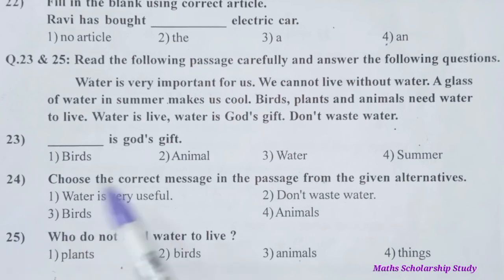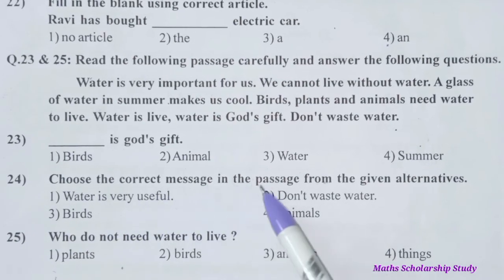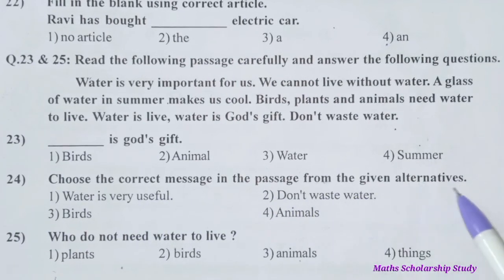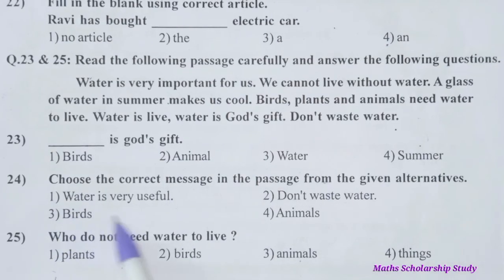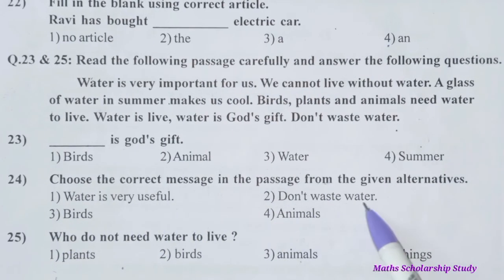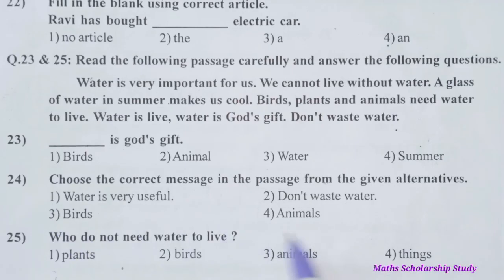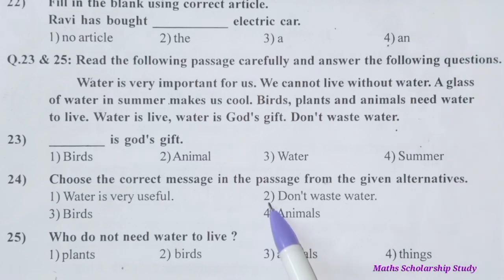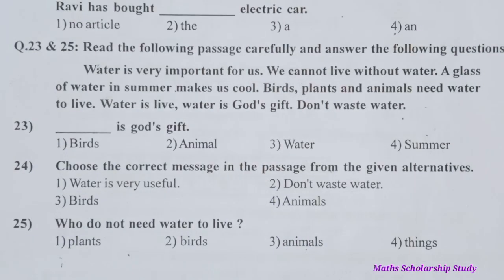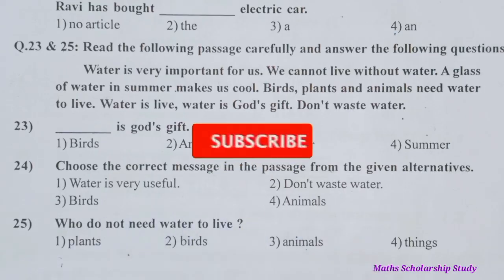Question number twenty-four: Choose the correct message in the passage from the given alternatives. Options are: water is very useful, don't waste water, birds and animals. The correct message is 'don't waste water'. Option number two is the correct option. Question number twenty-five: Who do not need water to live? Options: plants, birds, animals, things. Plants, birds, and animals are living things that need water.